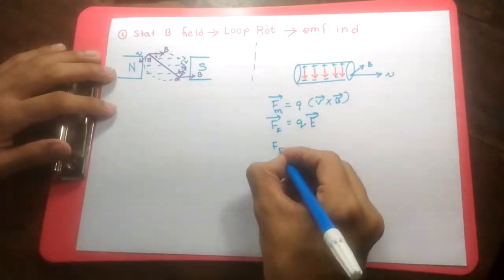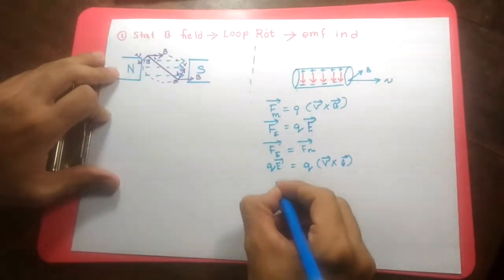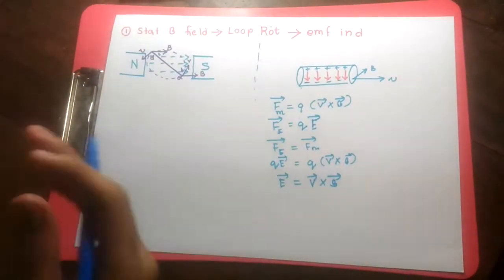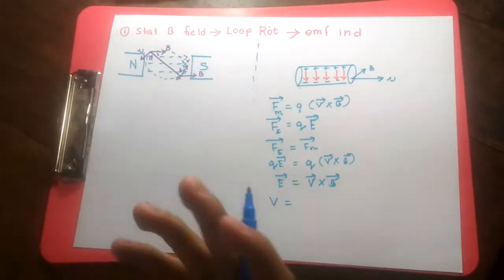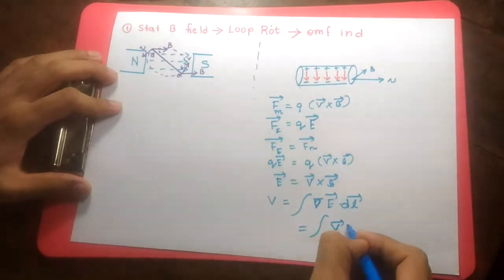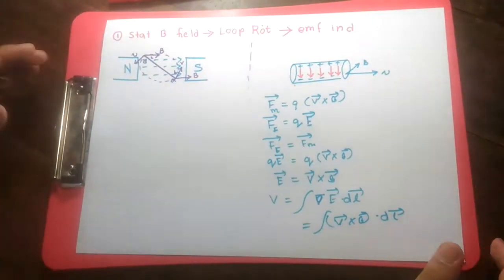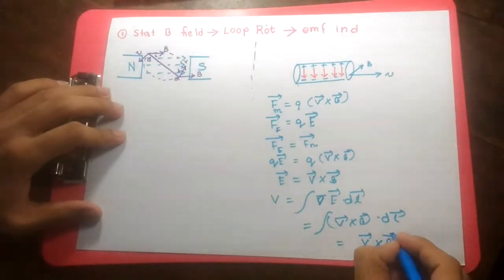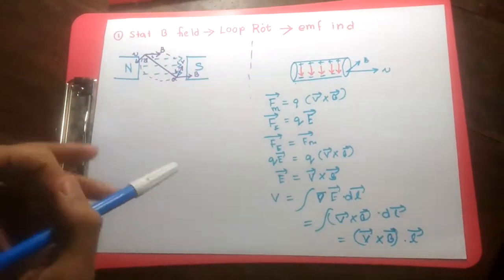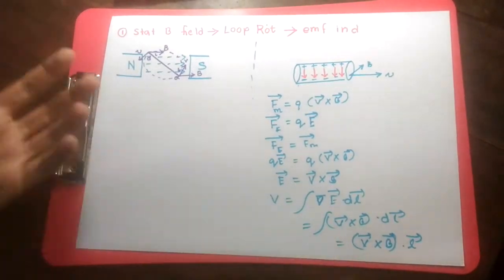In equilibrium, the electric force and magnetic force are equal, and we can derive that E equals V cross B. Knowing the electric field, we can find the voltage — if there is an electric field there is a potential difference — and from electricity and magnetism, voltage is simply the integral of E dot dL. That gives us V cross B dot dL, and assuming the cross product is constant over the whole surface, this simplifies to V cross B dot L, where L is a vector pointing in the direction of the electric field. This is the induced EMF equation.